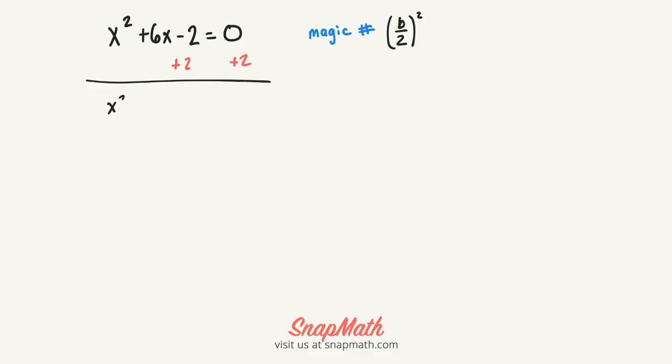Now we have x squared plus 6x plus, and then this is where our magic number is going to go. And I'll explain what that is, and then we have 2 plus our magic number.